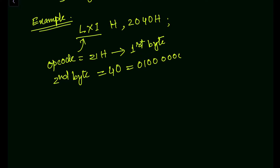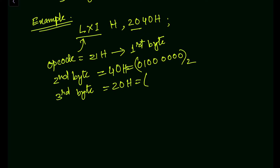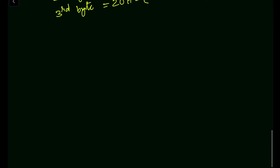The third byte is the higher-order byte, which is 20H. In binary, 20H is 0010 0000. The first byte opcode 21H in binary is 0010 0001. So for LXI H, 2040H: first byte is 21H (opcode), second byte is 40H (LSB), and third byte is 20H (MSB). We have now seen three different types of instructions for the 8085.